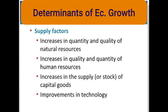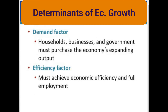Four of the determinants of growth relate to the physical ability of the economy to expand. Any increases or improvements in these supply factors will increase the potential size of an economy's GDP. The fifth determinant is the demand factor — to achieve higher production potential, households, businesses, and government must also expand their purchases of goods and services. The sixth factor, efficiency, involves the requirement that the economy achieve economic efficiency as well as full employment, using resources in the least costly way to provide the specific mix of goods and services that maximizes people's well-being.